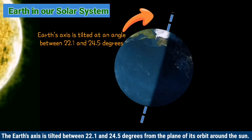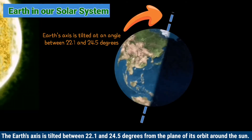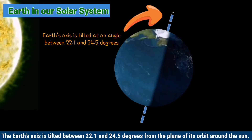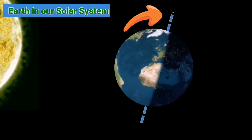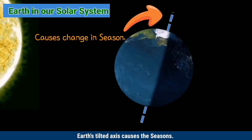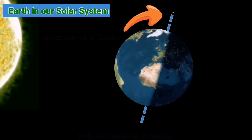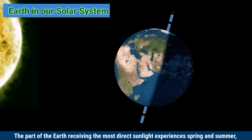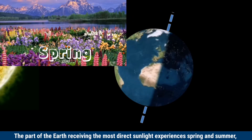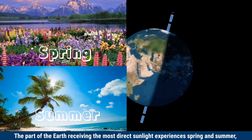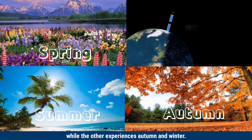The Earth's axis is tilted between 22.1 and 24.5 degrees from the plane of its orbit around the sun. Earth's axis causes the seasons. The part of the Earth receiving the most direct sunlight experiences spring and summer, while the other experiences autumn and winter.